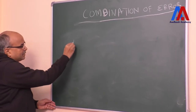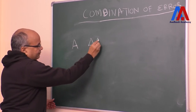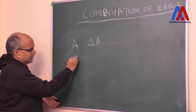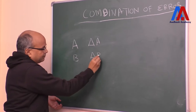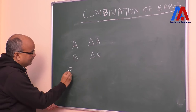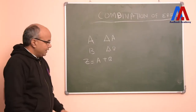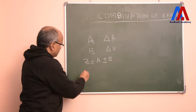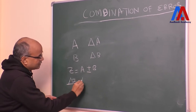So we have to understand that a dimension is 'a' and the error is delta a. Then we have to understand that another dimension is 'b' and the error is delta b. Now, if we have to measure a plus b or a minus b, then we measure the sum total of the errors.